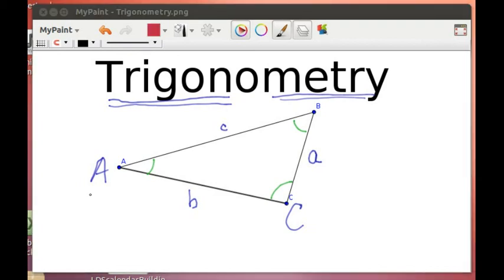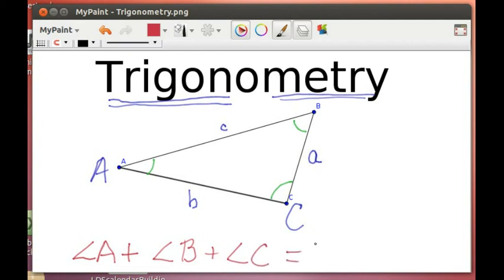Now an important thing to know is this important fact. In any triangle, the measure of angle A... Now we'll sometimes use angle A to talk about the literal angle, the physical angle, or we'll also use that same notation to mean the measure of that angle. Here we're using it to be the measure, plus the measure of angle B, plus the measure of angle C, is going to be 180 degrees.